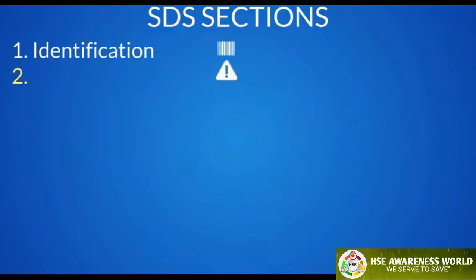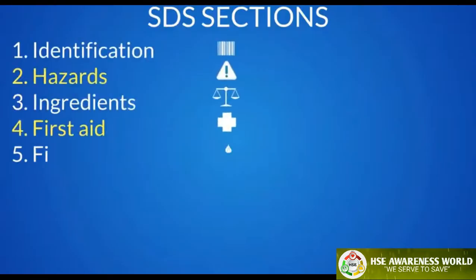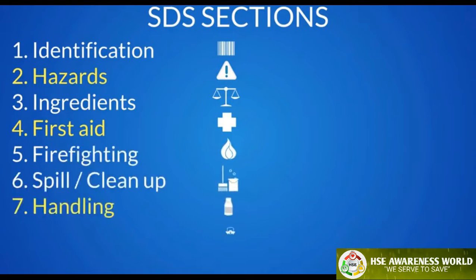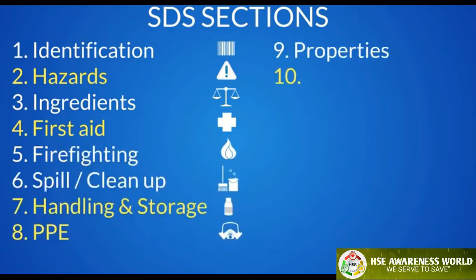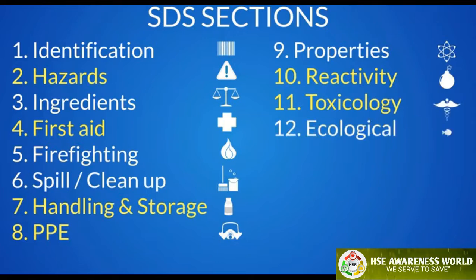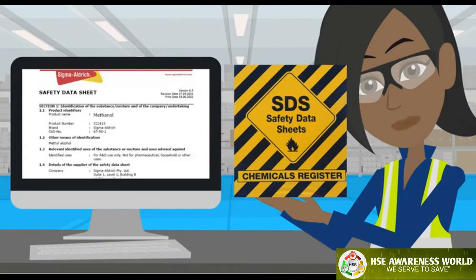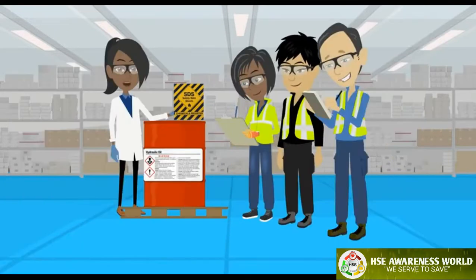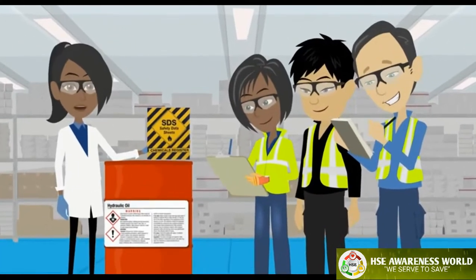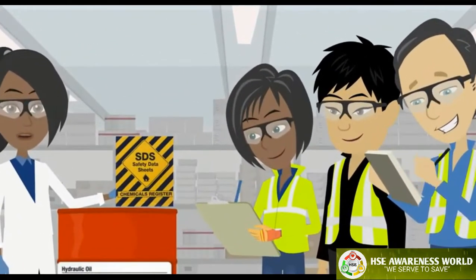The SDS is comprised of 16 sections, covering information on hazards, first aid, handling and storage, PPE, reactivity, toxicology, and disposal, to name just a few. Before using any substance, the manufacturer's SDS must be obtained, fully reviewed, and any hazards mitigated. Anyone who may be exposed to a substance has the right to know and be given access to the SDS and any other relevant information.